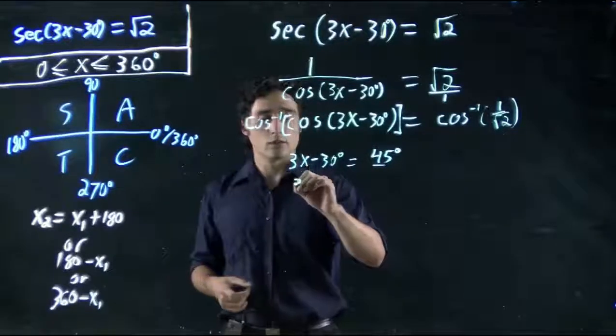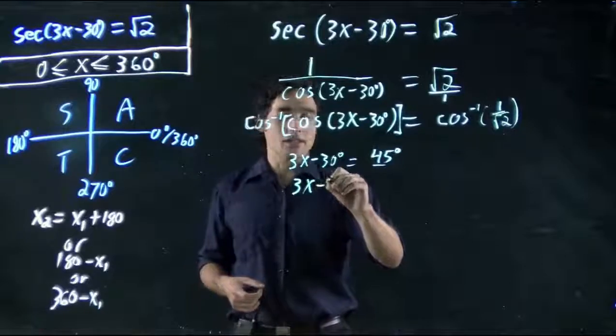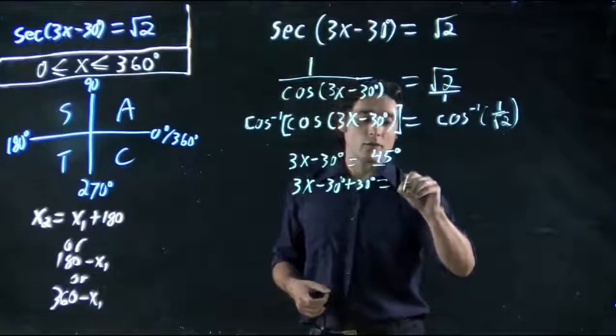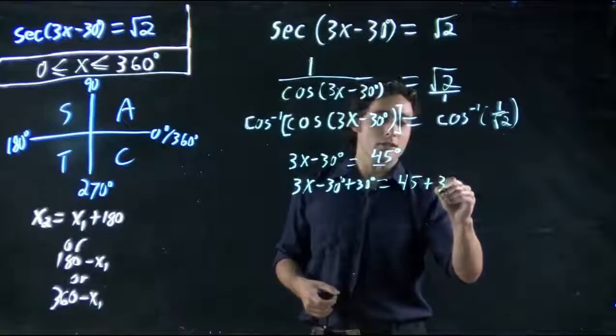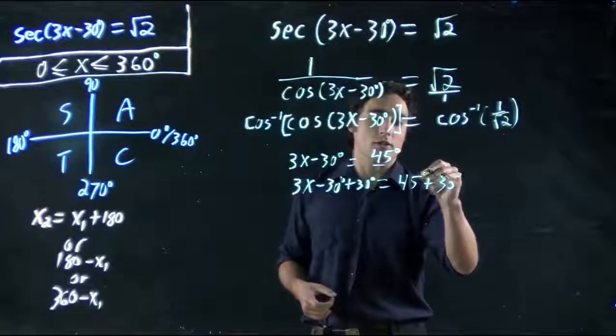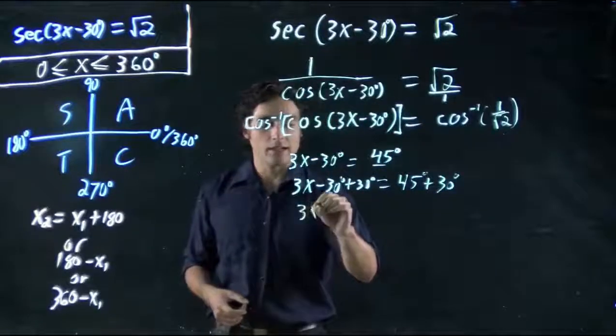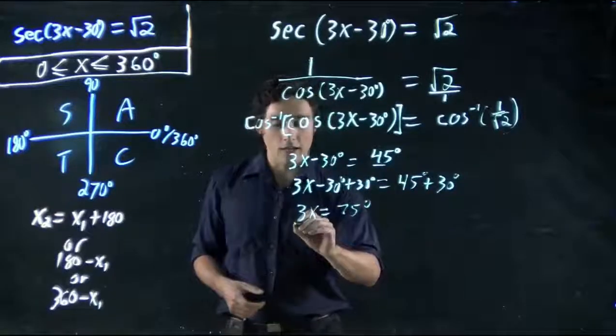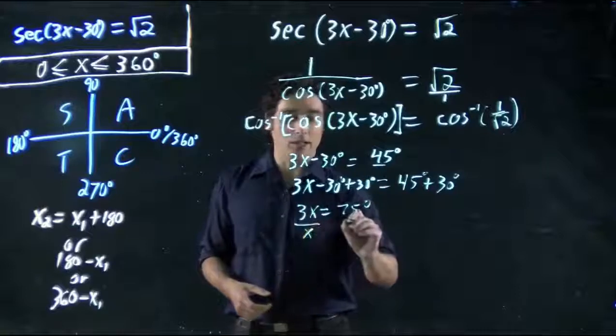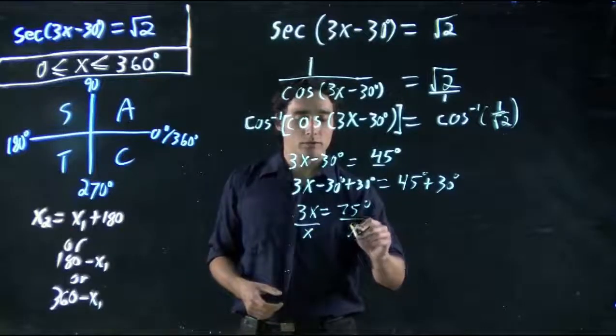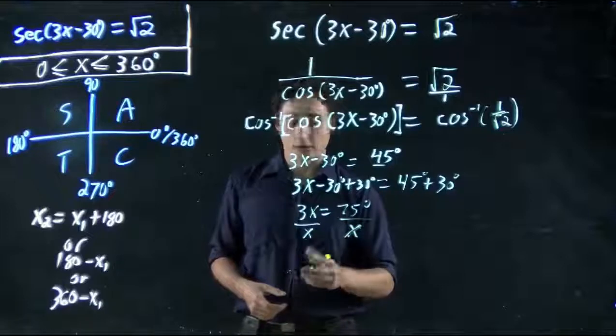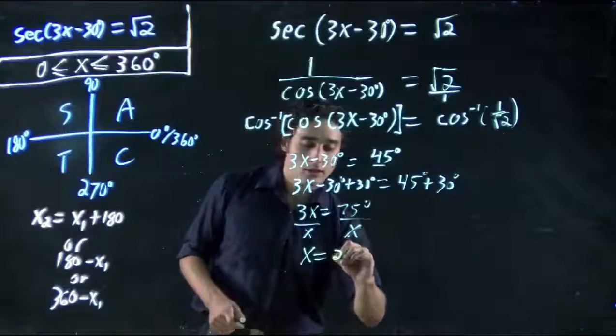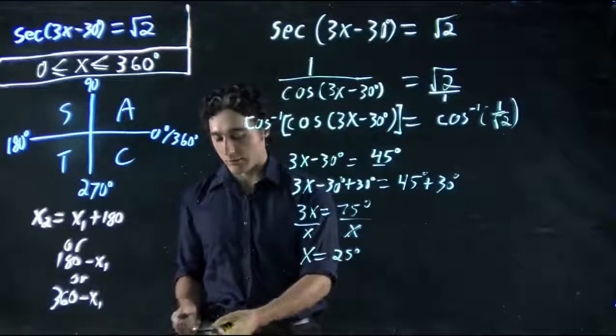In this case, we go 3x minus 30 plus 30, because we're canceling out the 30. So that's equal to 45 plus 30 as well. And, of course, these are all degrees. So we get 3x equals 75 degrees. And if we want to get x on its own, divide both sides by 3. And we get x equals 25 degrees. So that's one possible solution we have.